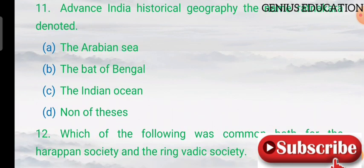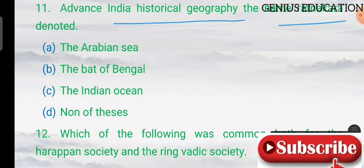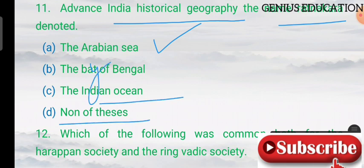Question 11: the name Ratnakara denoted which body of water? Options are the Arabian Sea, the Bay of Bengal, the Indian Ocean, and none of these. The answer is the Indian Ocean.